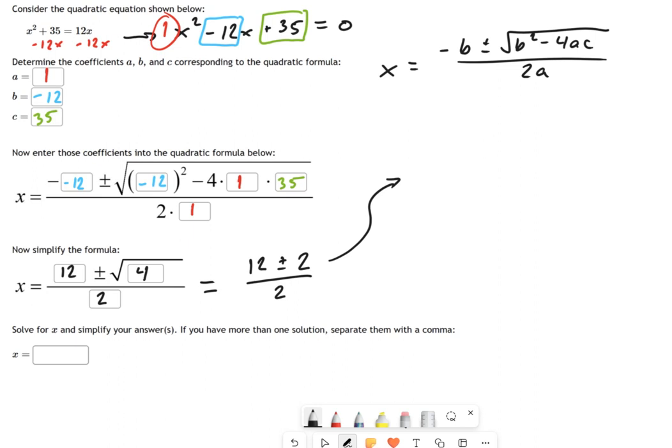Now let's turn this into two things. One of them is 12 plus 2 over 2, and one of them is 12 minus 2 over 2. That's what the plus or minus means.